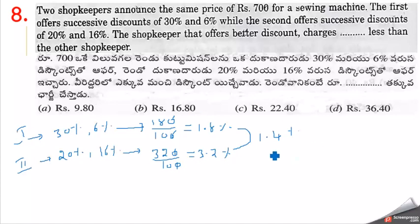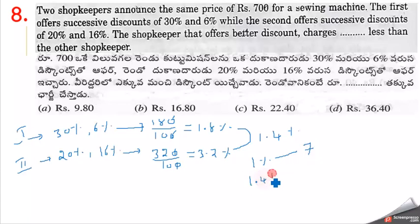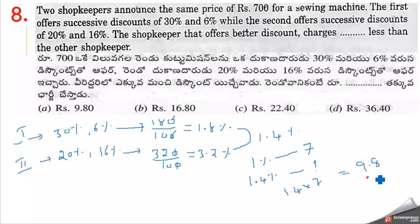1% of 700 rupees equals 7 rupees. So 1.4% equals 1.4 into 7 equals 9.8 rupees, approximately 10 rupees. Answer: 10 rupees.